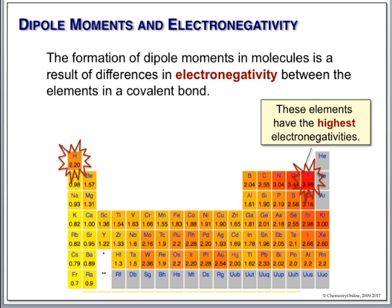The electronegativity scale starts at the bottom — Francium is the lowest at 0.7, and Fluorine is the highest at about 4. The bond between hydrogen and fluorine: we have 2.2 and 4, which is a very polar covalent bond. Without needing to understand all the dynamics, if you have a more electronegative atom, it will draw electrons towards itself. That's the bottom line.